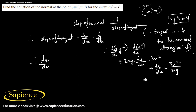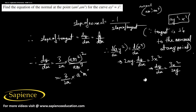Substituting the point (am², am³): dy/dx = (3 / 2a) · (am²)² / (am³) = (3 / 2a) · (a²m⁴) / (am³). The a terms cancel, giving dy/dx = 3m/2.